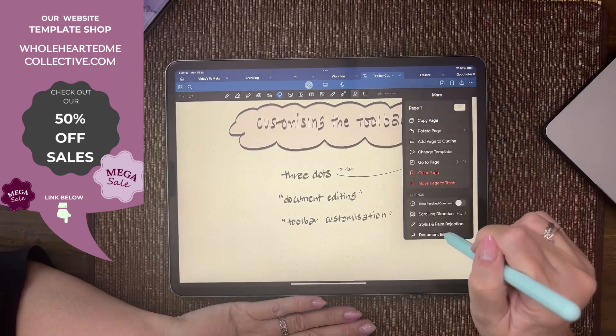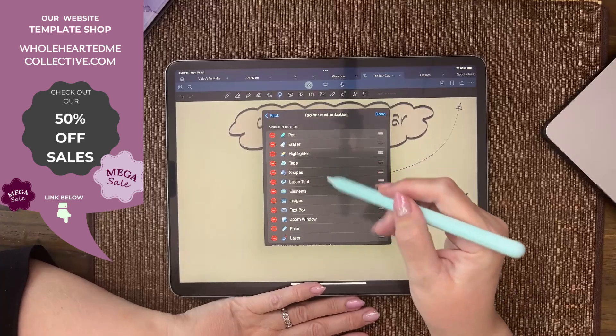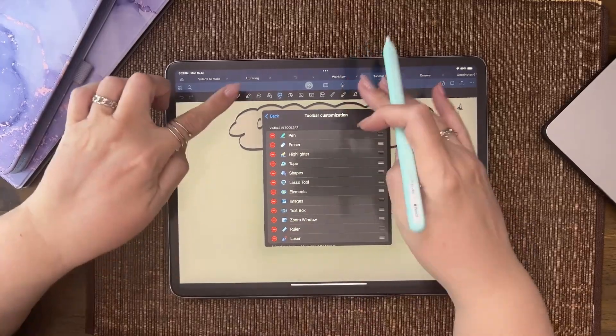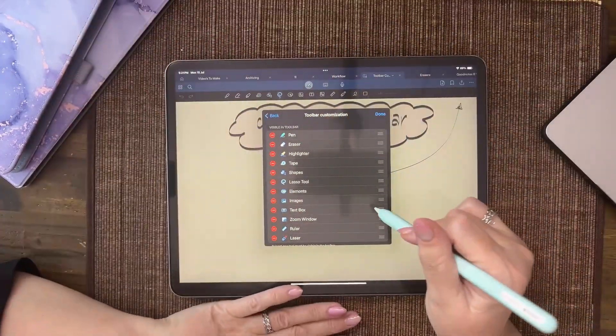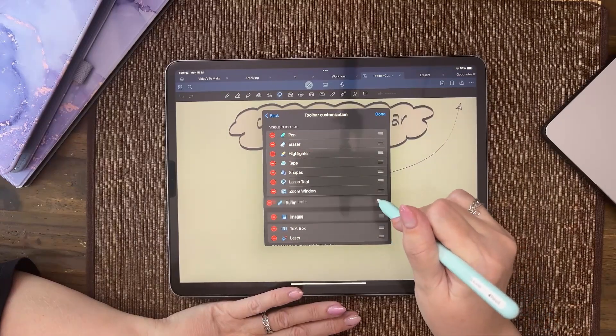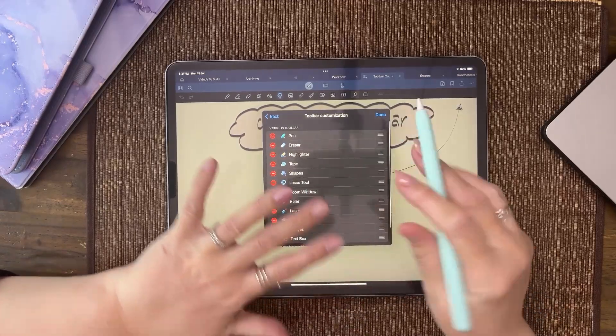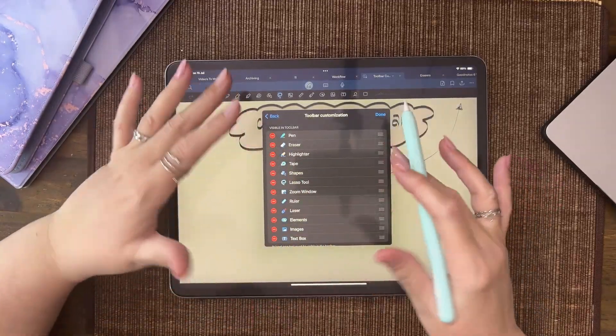Some I don't use as much, so what I do is put the things I use at the beginning and at the end, and the ones in the middle I don't use as much. The zoom window I hardly ever use, the ruler I hardly ever use.